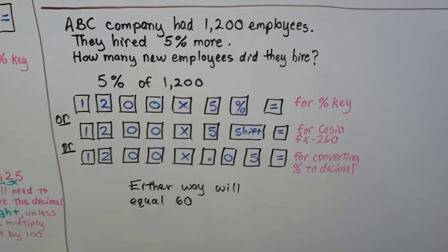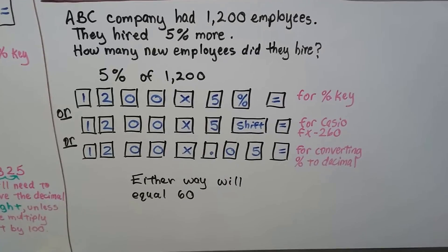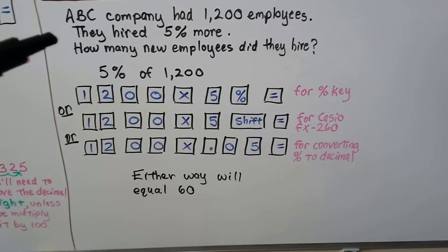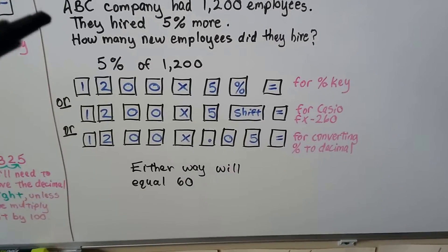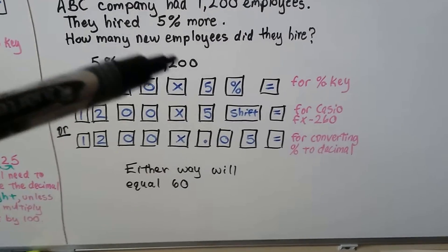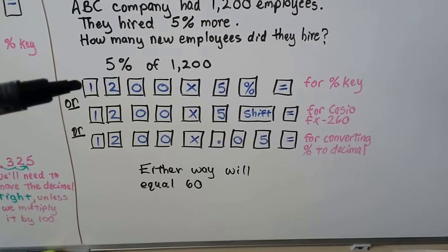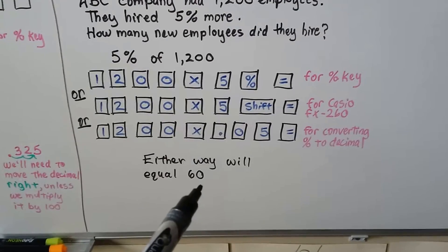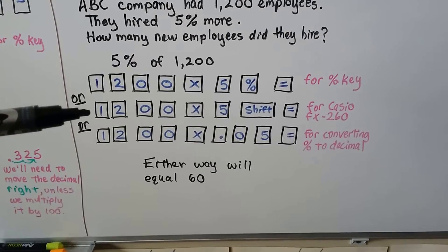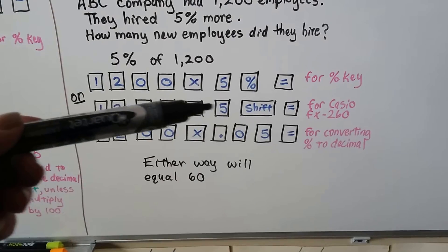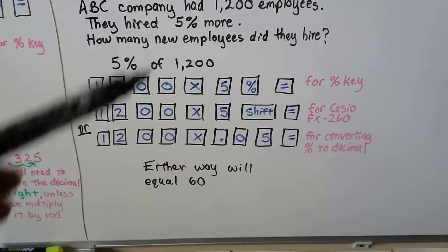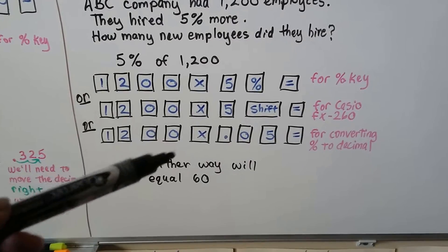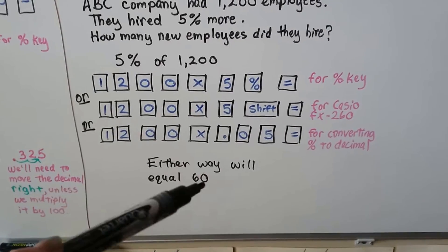Now we did this problem in the previous video, but I'm going to change it a little bit. The ABC company had 1,200 employees and they hired 5% more. How many new employees did they hire? We need to find 5% of 1,200. So if your calculator has a percent key, we can just go 1,200 multiplication key, 5 and hit the percent. And that's going to tell us they hired 60 people. For the calculator they should lend you on the GED, you can put in 1,200 multiplication sign, 5 shift equals. Or you could change this 5% to a .05 as a decimal and then just put in the 1,200 multiplication key, decimal point, 0, 5 equals, and you'll get 60.